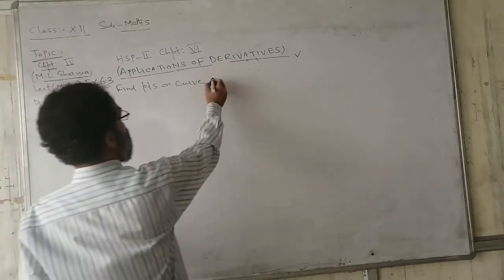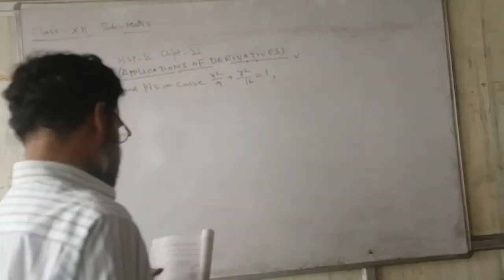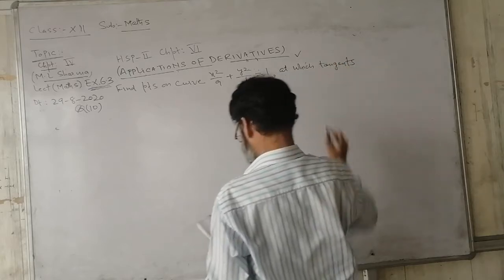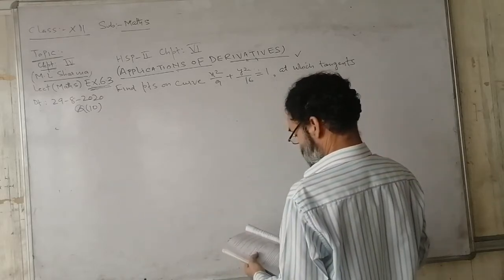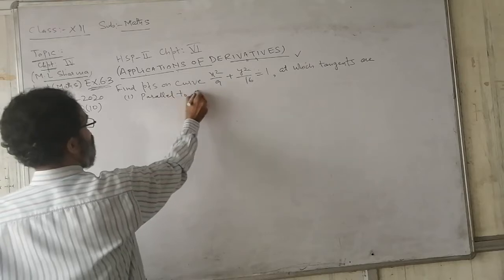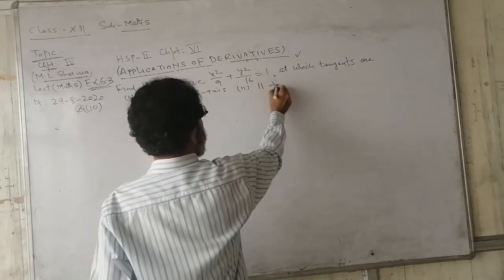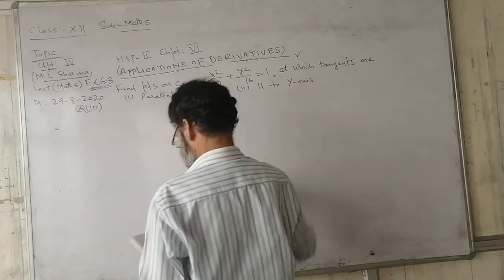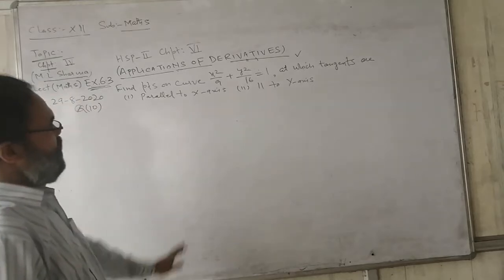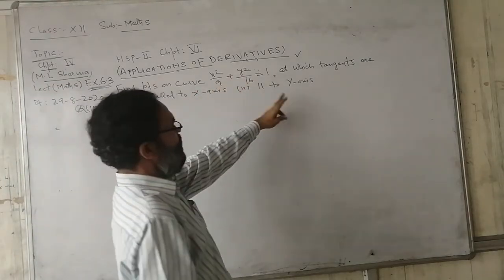We have to find the points on the curve whose equation is x²/9 + y²/16 = 1, at which tangents are: number 1, parallel to the x-axis, and number 2, parallel to the y-axis. This is the question — you have to find points on this curve at which tangents drawn are parallel to x-axis or y-axis.